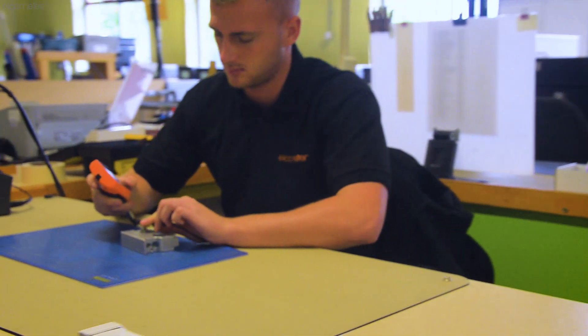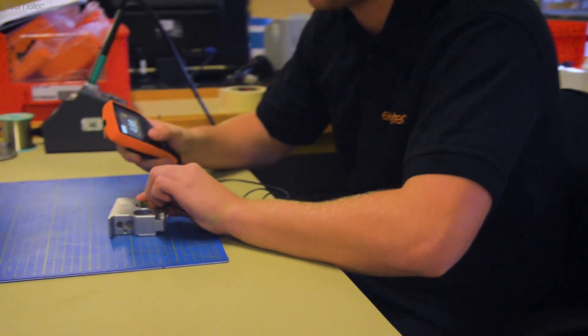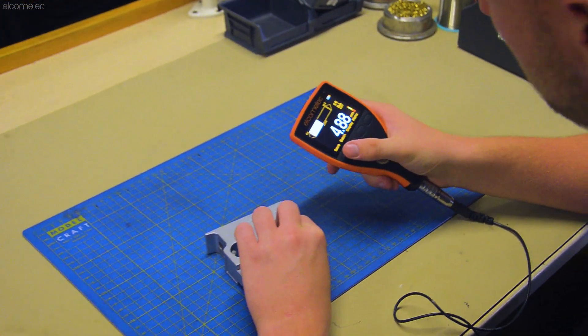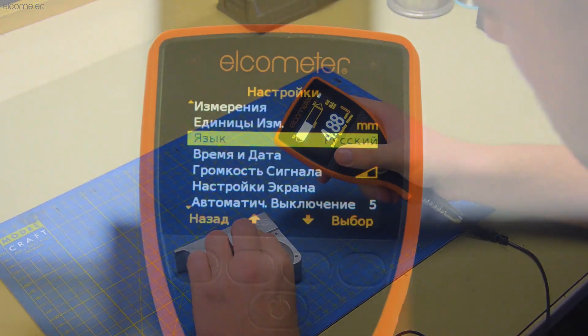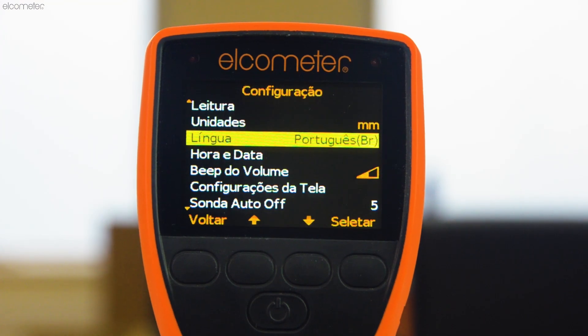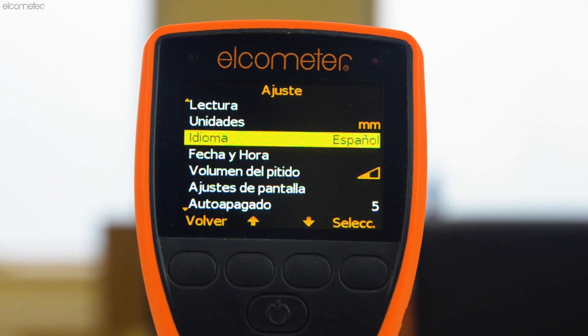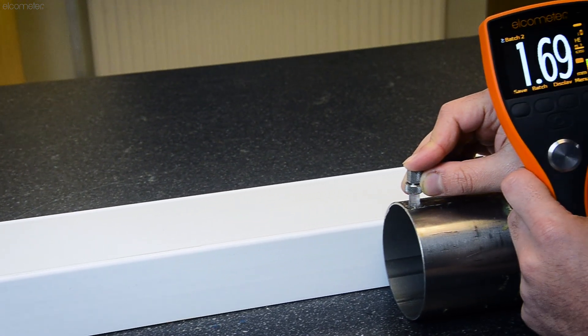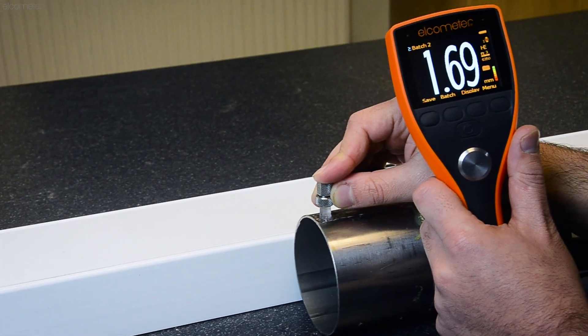Unlike other ultrasonic thickness gauges which can be notoriously difficult to operate with confusing and unclear menus, the Elcometer PTG range's easy-to-use menu system in multiple languages means they can be used straight out of the box with little or no training required, while still delivering highly accurate material thickness measurements.